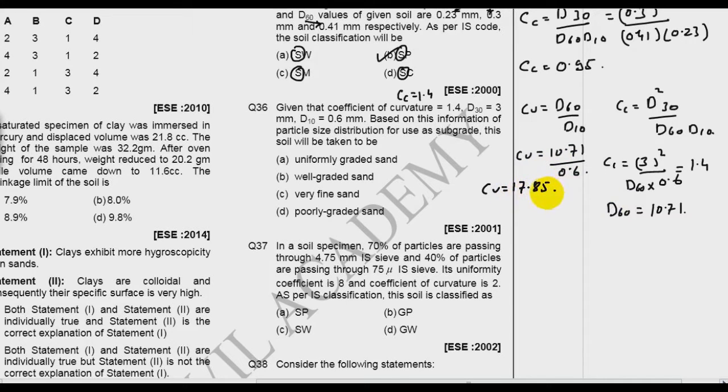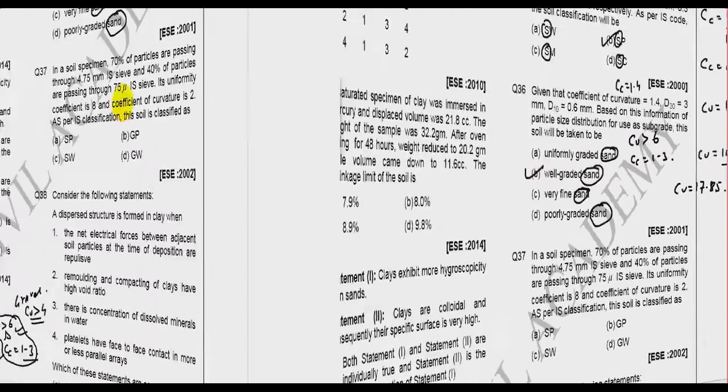Now if you see, Cc should lie between 1 to 3 and Cu should be greater than 6 for the soil to be well graded sand. All the options contain sand. So what will be our answer? It should be well graded because both the conditions are satisfied which is Cu greater than 6 and Cc should lie between 1 and 3. So B is the right answer.